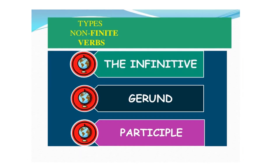Students, there are two types of verbs which we have seen — finite and non-finite. Non-finite verbs have three types: the first is infinitive, the second is gerund, and the third is participle. So let us read about them in detail.